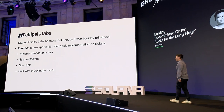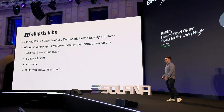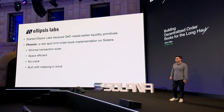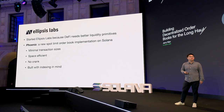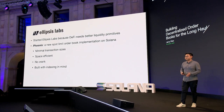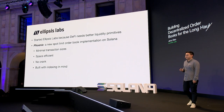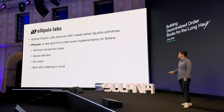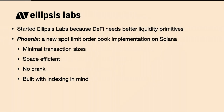As mentioned at the start of the talk, I left Solana Labs a few months ago to start a new company called Ellipsis Labs. I wanted to start Ellipsis Labs because I think that DeFi needs better liquidity primitives, order books being one of them. This is why we're building Phoenix — a new spot limit order book implementation on Solana. Phoenix will have a few key characteristics: minimal transaction sizes, space-efficient representation of bids and offers, no crank, and it's designed with indexing in mind. We really hope to build a liquidity primitive that can last for a very long time and is built with a lot of thought.